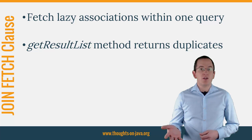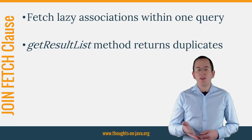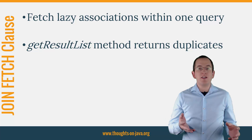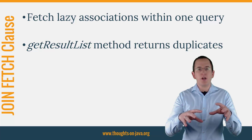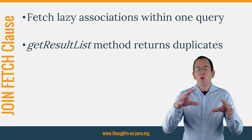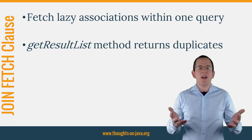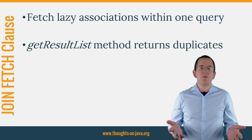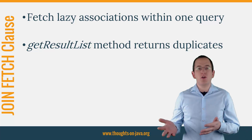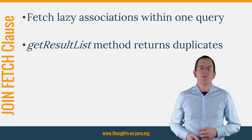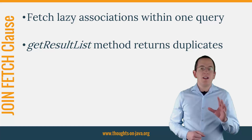The SQL query joins the associated database records, and the result set consists of a combination of a parent record with each child record. Unfortunately, Hibernate doesn't resolve these duplicates by default. Let's have a look at an example.